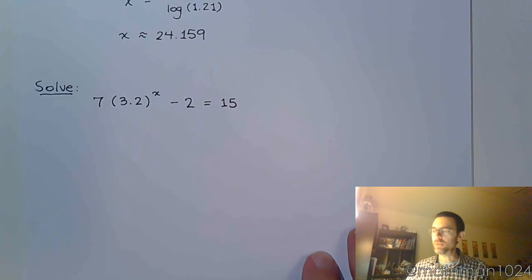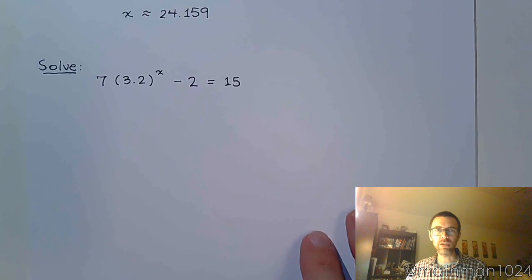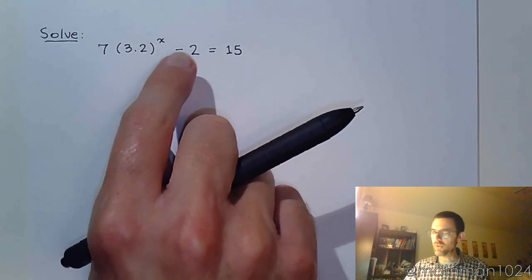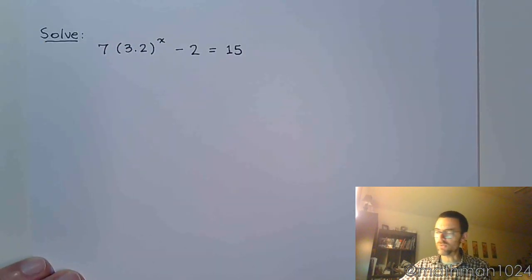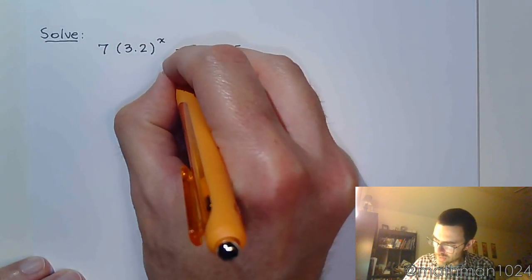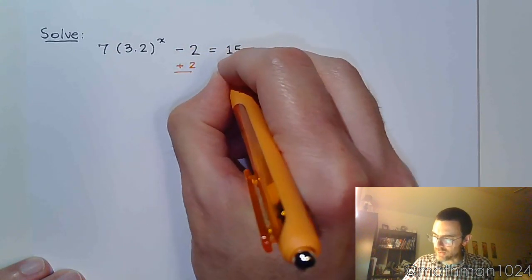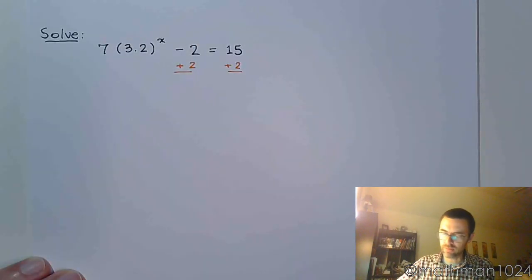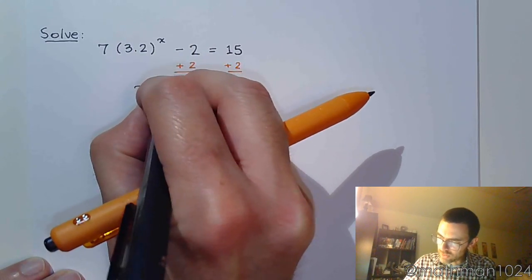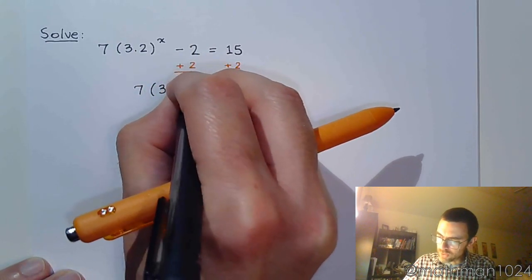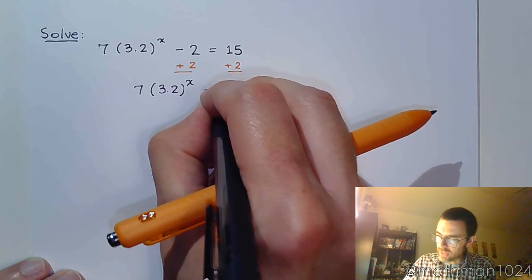This one is a bit more complicated because there's more stuff to do before I can apply logs. See, I've got all these guys around here. I'm just trying to get this exponential piece by itself. So first things first, we add 2 to both sides. So 7 times 3.2 to the x equals 17.